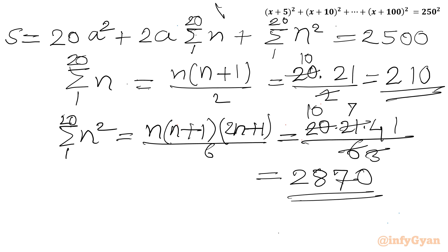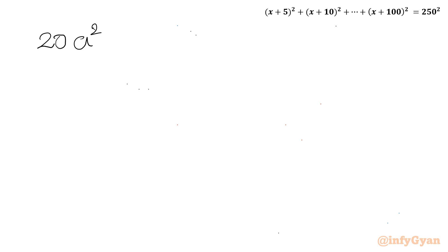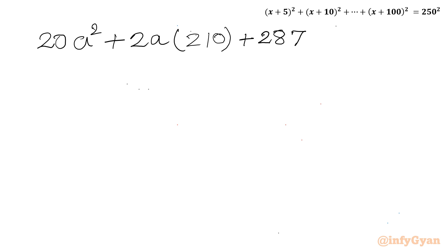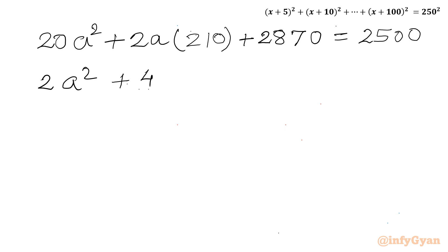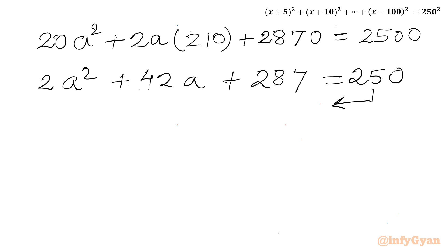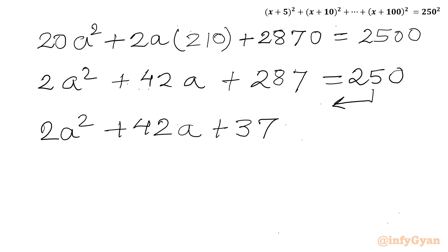Applying these values: 20a² + 2a×210 + 2870 = 2500, which gives 20a² + 420a + 2870 = 2500. Dividing through by 10: 2a² + 42a + 287 = 250. Taking 250 to the LHS: 2a² + 42a + 37 = 0.